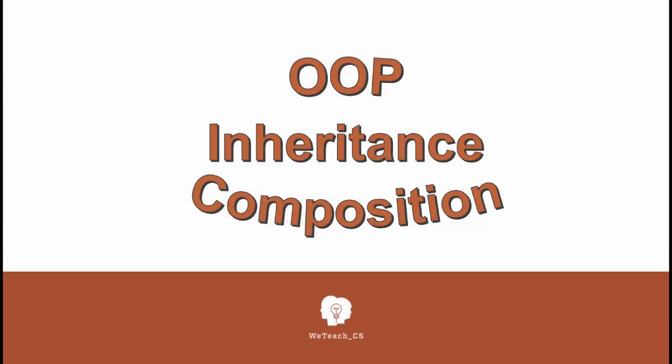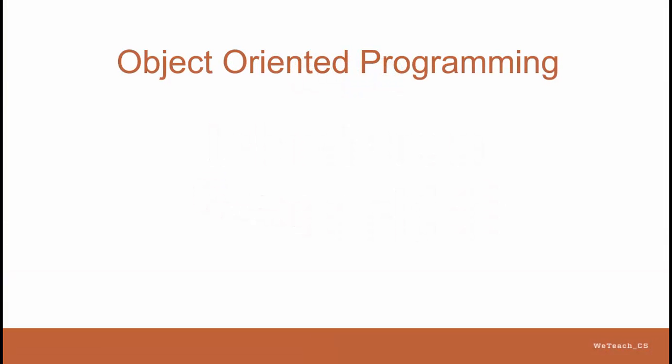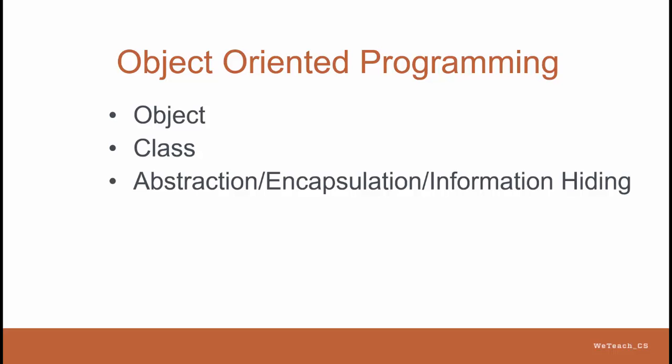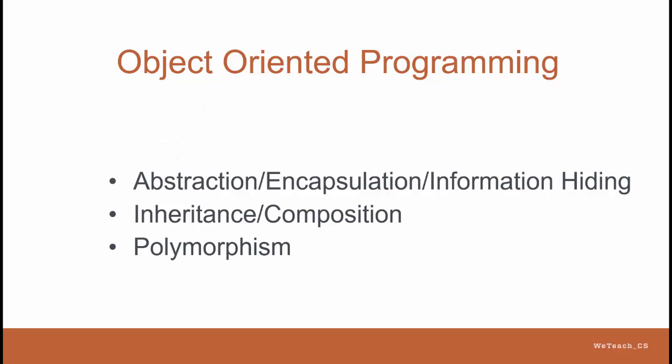Previously, we discussed the basic fundamentals of object-oriented programming, which features the object and class, and is built around the three key features of abstraction, inheritance, and polymorphism. We talked about objects, classes, and abstraction, along with related ideas of encapsulation and information hiding.